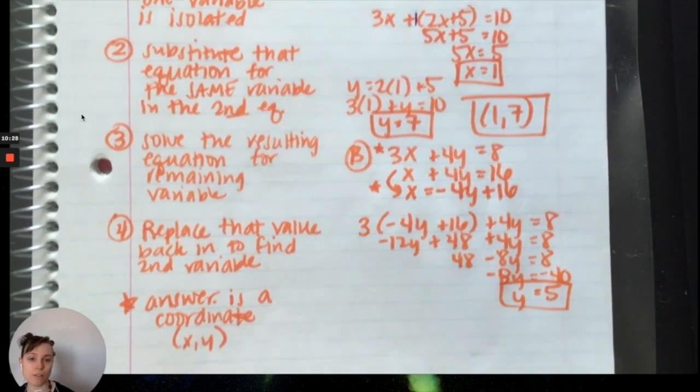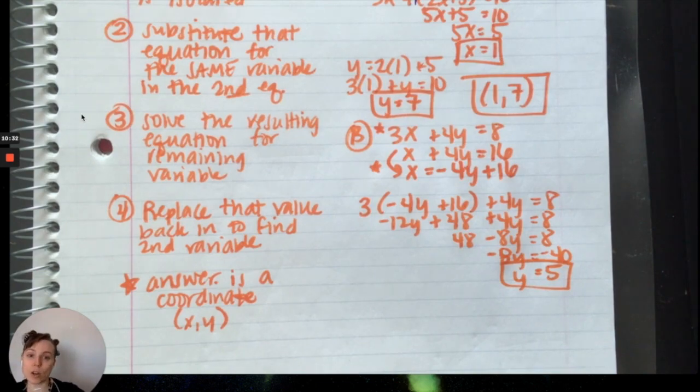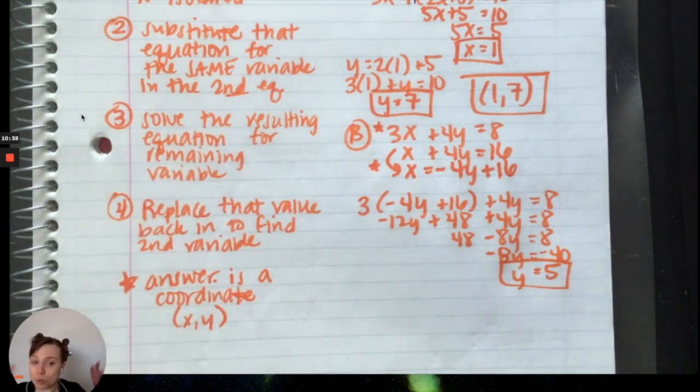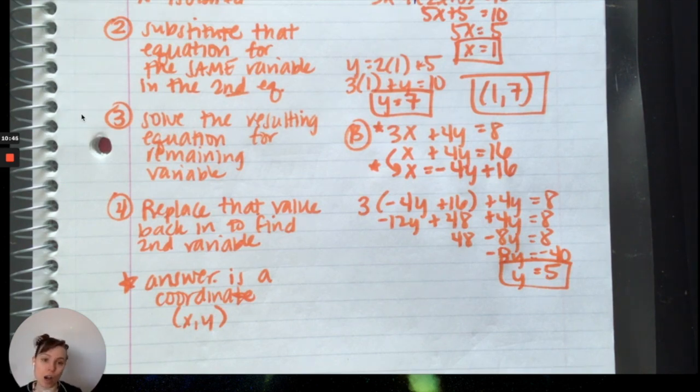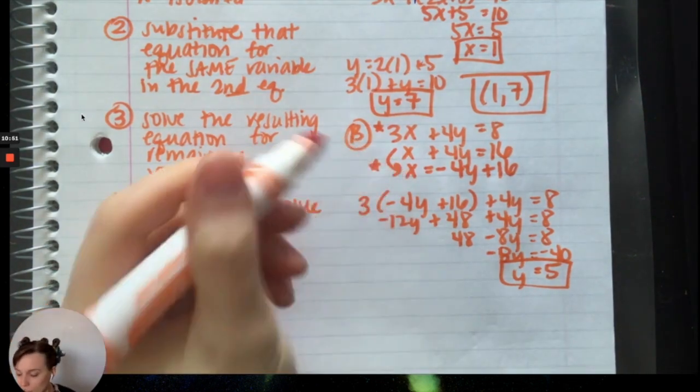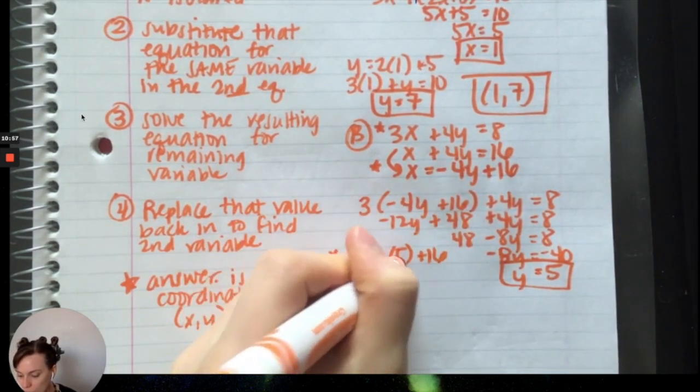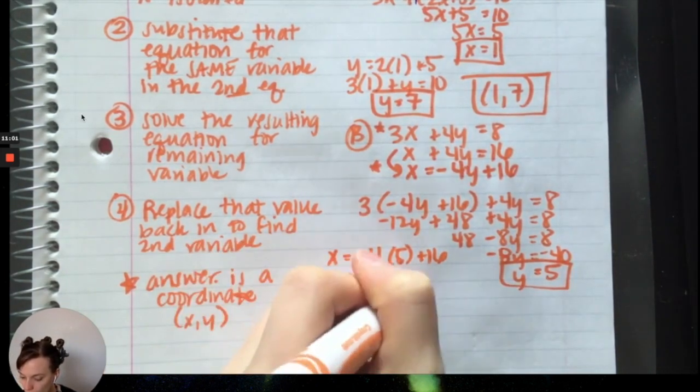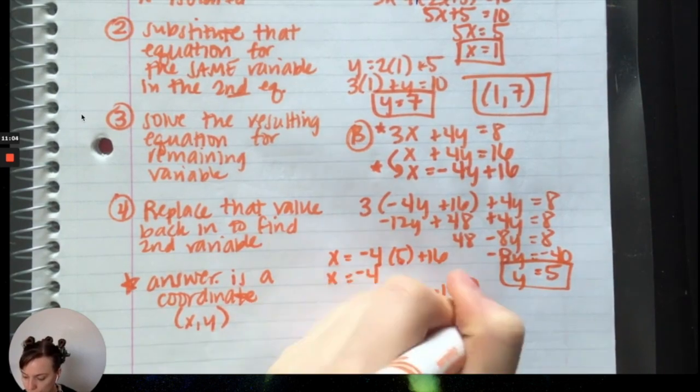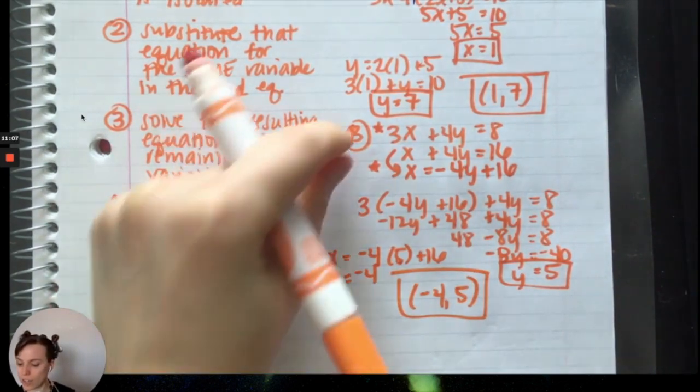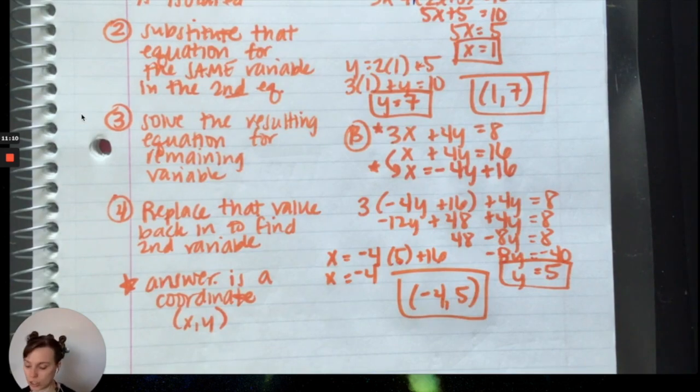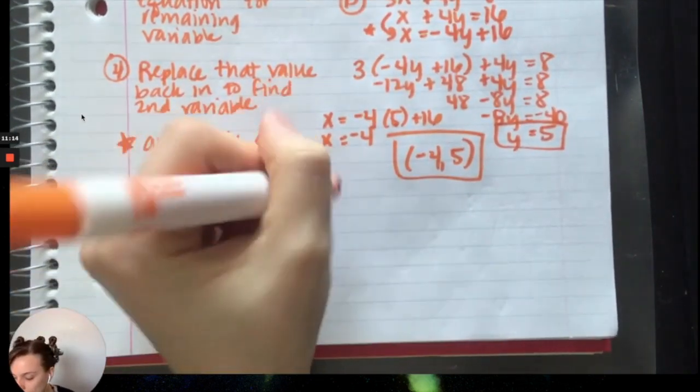So my Y is positive 5. I want you to pause, try to substitute that back into one of the equations and find your X. Remember that all three of these equations are true at Y equals 5. I could substitute Y as positive 5 into any of these equations. The simplest one is our isolated version, so I'm going to have X equals negative 4 times 5 plus 16. That's negative 20. Negative 20 plus 16 is negative 4. So my coordinate will be negative 4 comma 5.